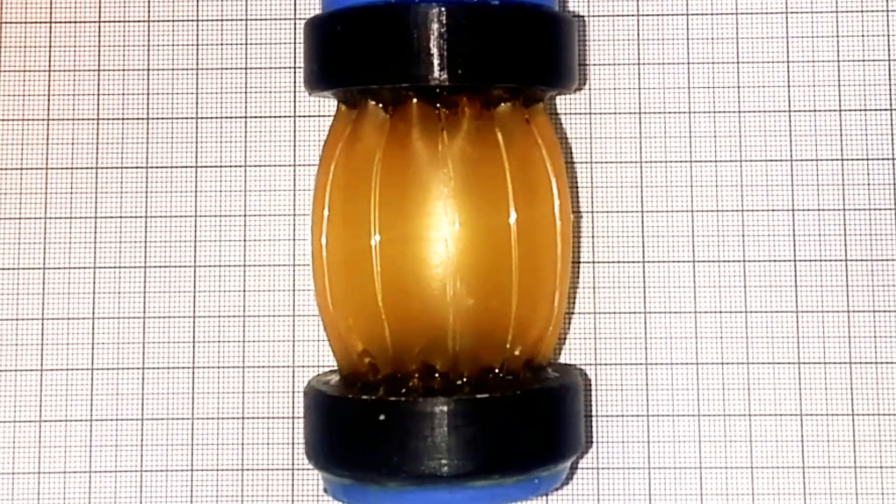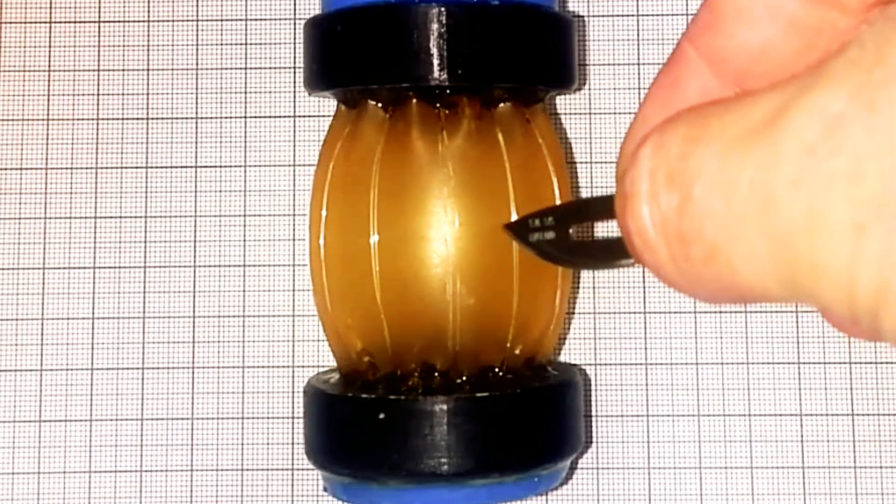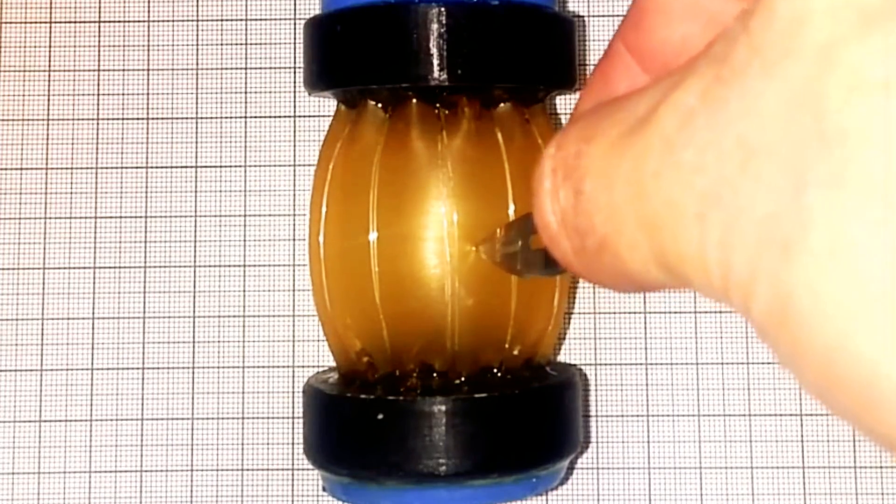researchers have built soft robots with a material that, with a little heat, can reassemble itself after some types of damage.